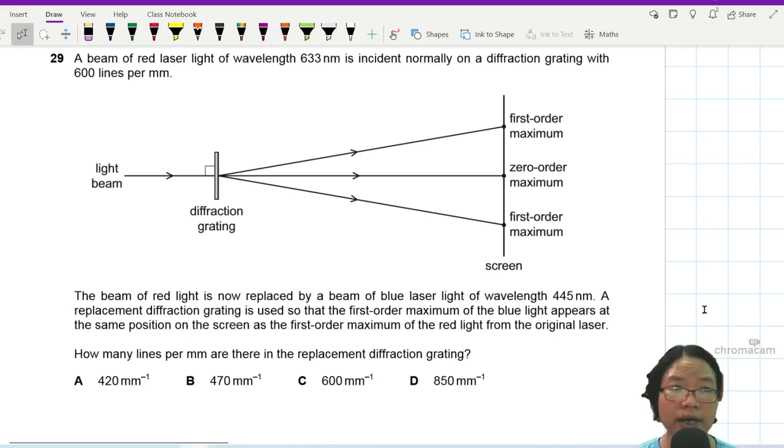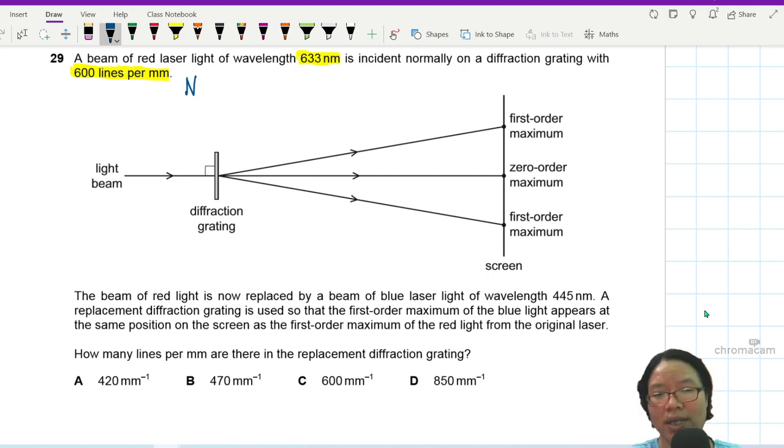Question 29. A beam of red laser light of wavelength 633 nanometer is incident normally on a diffraction grating with 600 lines per mm. So this is my N, or there are 600 lines in 1 mm.